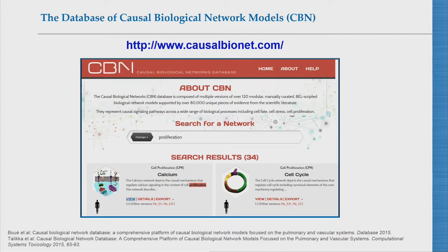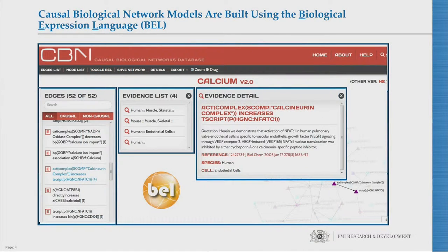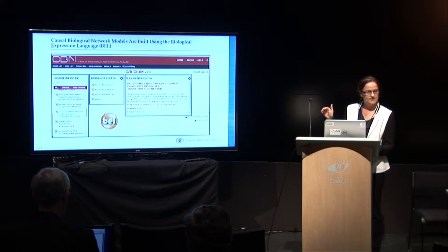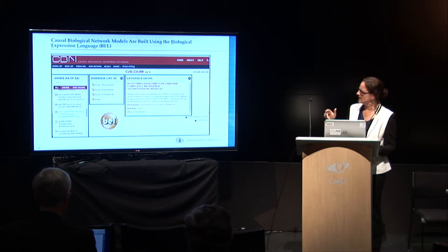The models are now hosted on a website — the address is on top. These models are encoded in BEL. You can go and look at the model, take any edge you want, look at the details, and see the BEL statement behind it. You see the context, you see all the evidences, which are the text captures from the publication where they were extracted. And you can go back to the original article.